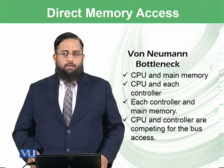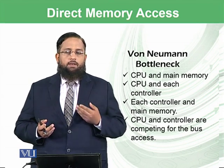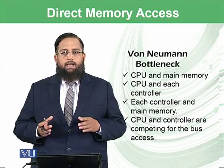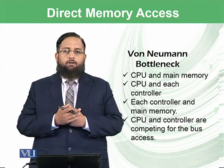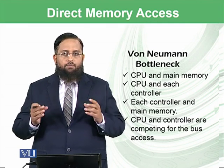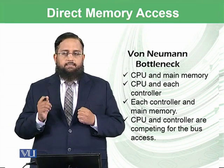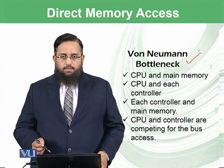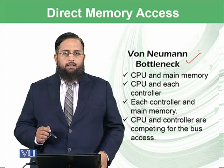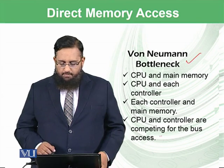In the Von Neumann architecture, there is a central bus, and everything — the CPU, main memory, and all controllers — is connected to that bus. If the CPU and controller are competing for access to this bus, that problem is known as a bottleneck, because one must wait until the other completes its work. So the CPU, main memory, and controllers are all competing for bus access.